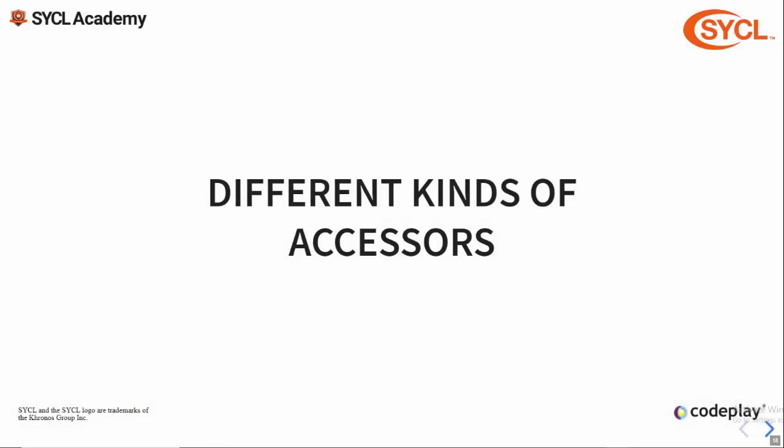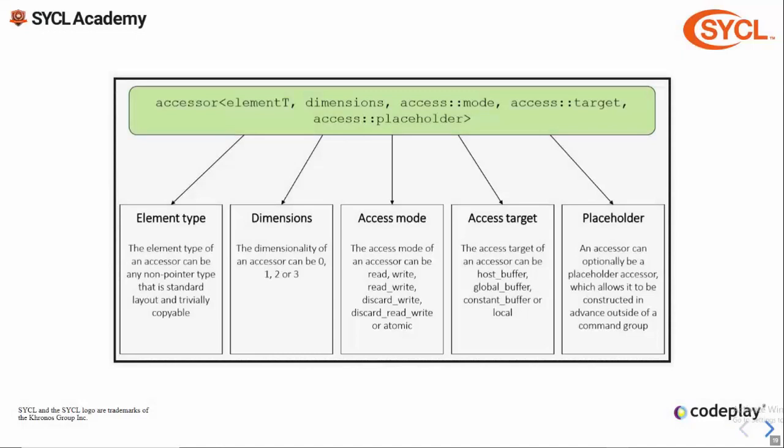Now we're going to take a look at the different kinds of accessors and how to use them. The accessor class has a number of template parameters which govern the various properties of how it accesses data. Firstly there's the element type — the data type of the elements being accessed, which can be any standard layout and trivially copyable type. Next there's the dimensionality, which can be 1, 2, 3, or even 0. Zero-dimensional accessors are a special case for accessing a single scalar value. Then there is the access mode, describing whether the accessor is reading or writing to the data, with discard variants that explicitly specify the original data can be discarded. Next is the access target, specifying the memory space in which memory is accessed. Finally there is the placeholder parameter, an optional mode allowing certain accessors to be constructed outside of a command group and registered later.